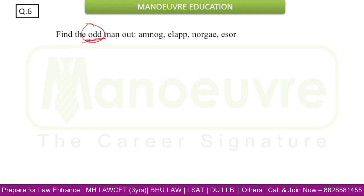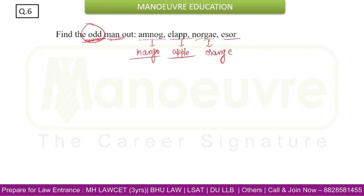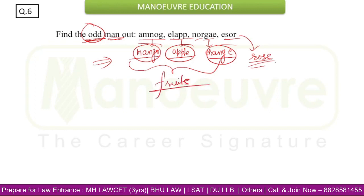Here we have to find the odd man out. The coded words are: AMNOG = Mango, ELPPA = Apple, NORGA E = Orange, and ESOR = Rose. Mango, Apple, and Orange are all types of fruits, while Rose is a type of flower. Hence the odd man out is Rose.